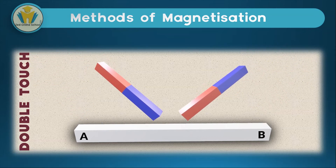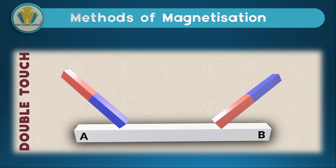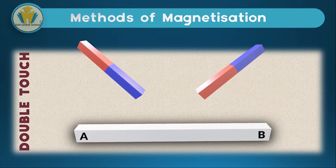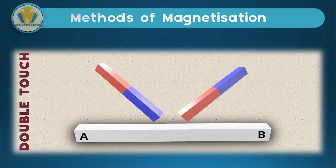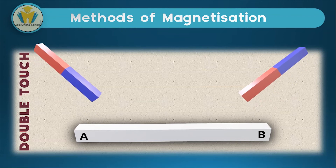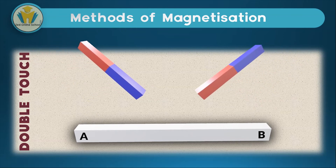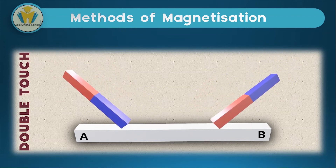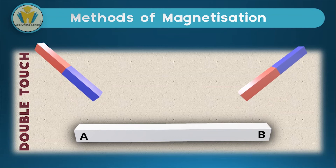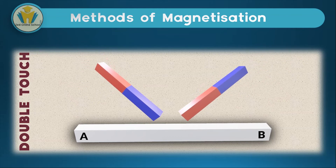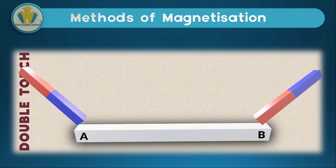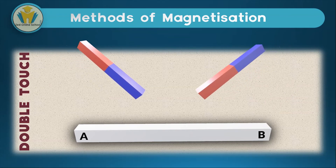We follow the same principle in giving the poles on side A and B names. The magnet on our left has its south pole being used, therefore side A is going to be north pole, while side B is going to be the opposite of north.